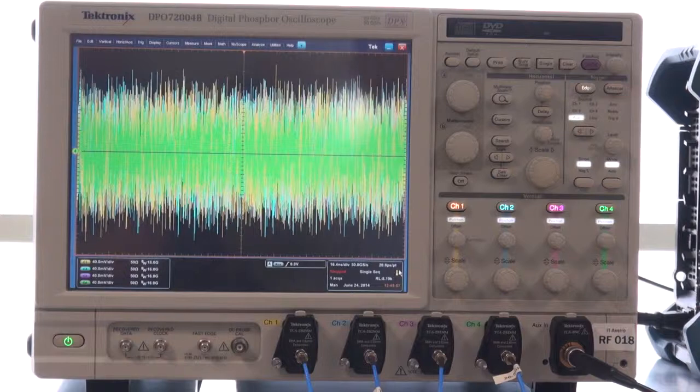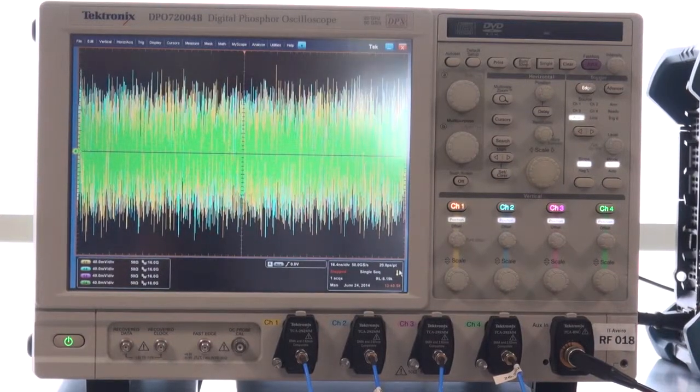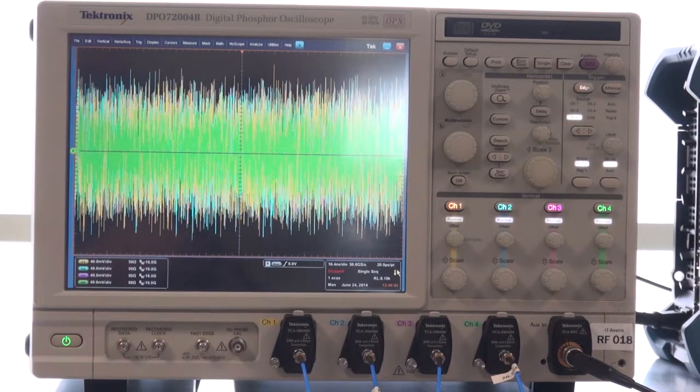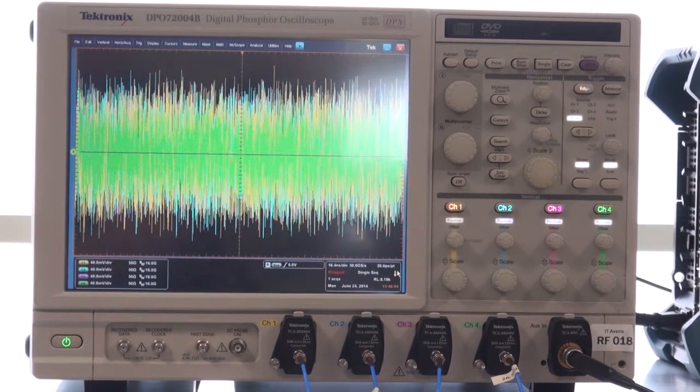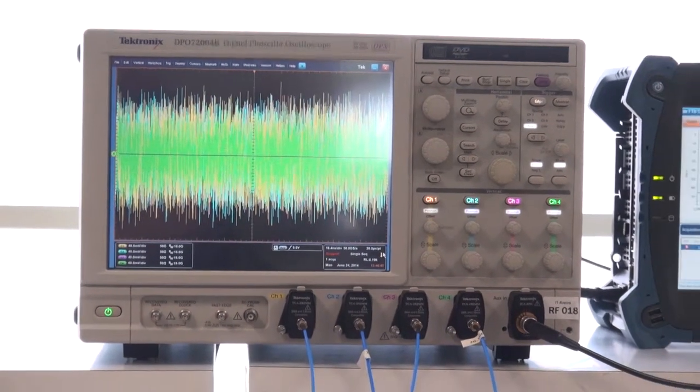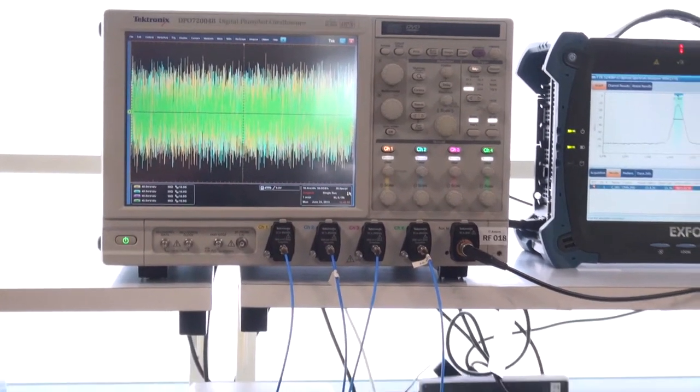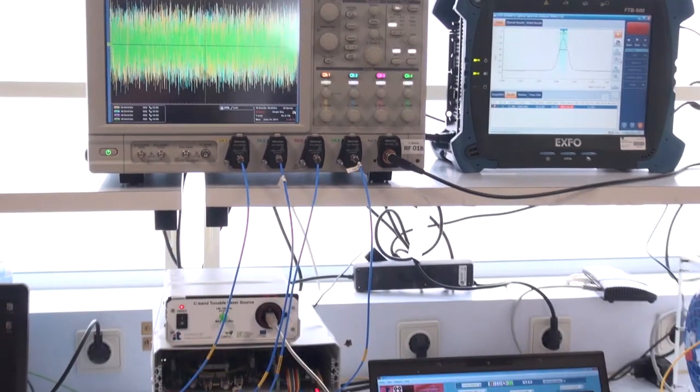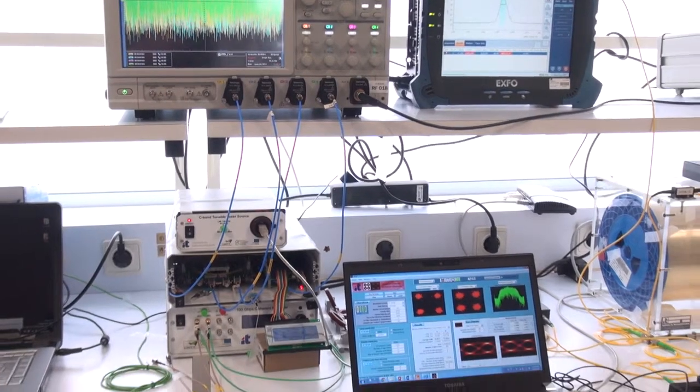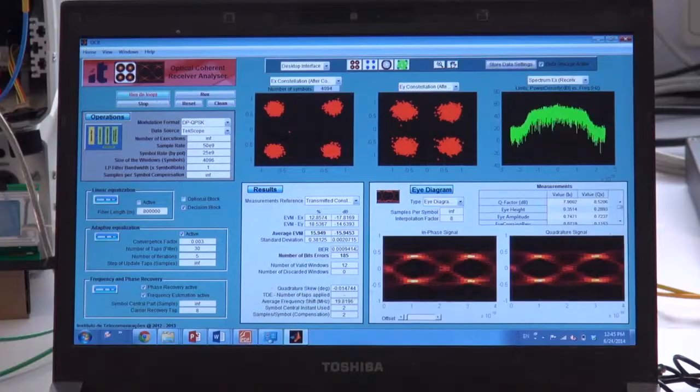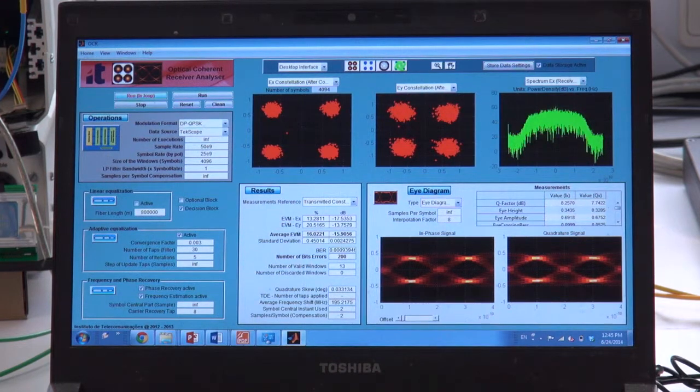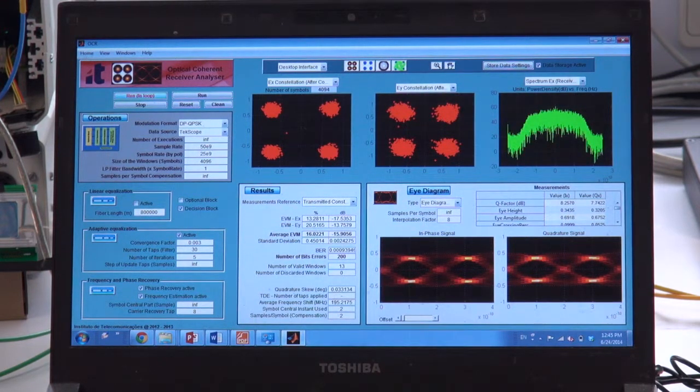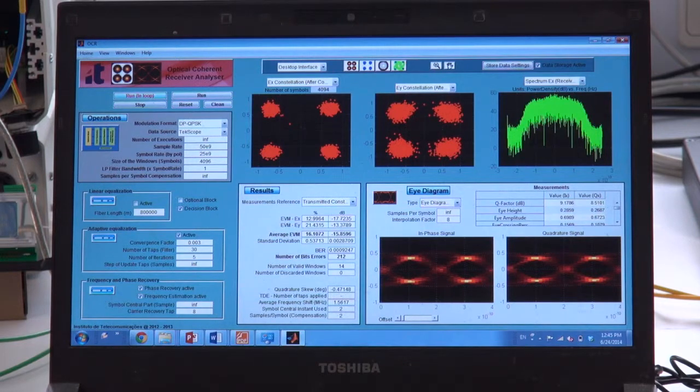The electrical signals after balanced photodetectors were converted to digital form using a 50 giga sample real-time oscilloscope with analog bandwidth around 20 gigahertz. After the coherent receiver, signal is processed offline using the DSP software. The role of DSP in the optical coherent receiver analyzer is to reconstruct the transmitted signal from the received signal.